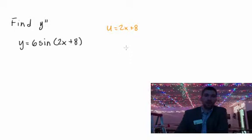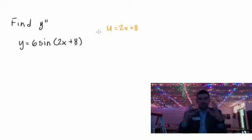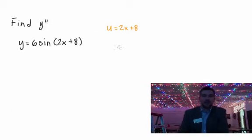So the reason I want u to be 2x plus 8 is because that's actually the thing inside my big function. My big function in this case is sine. So du dx is going to be equal to 2.